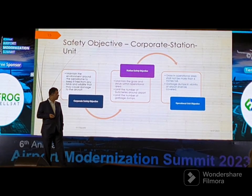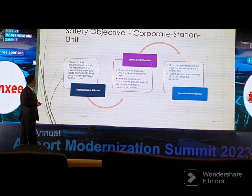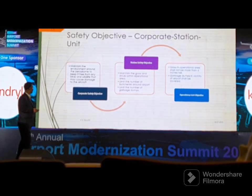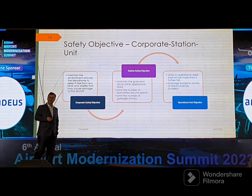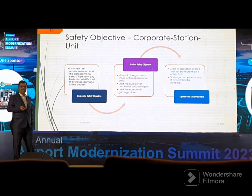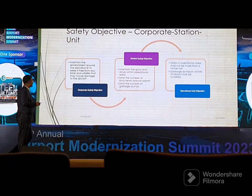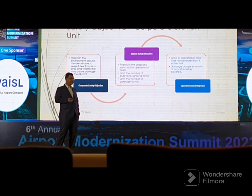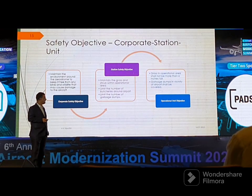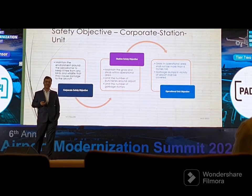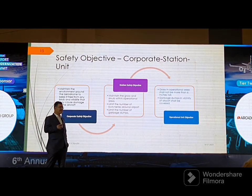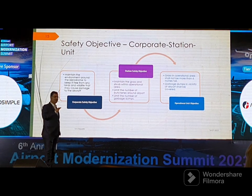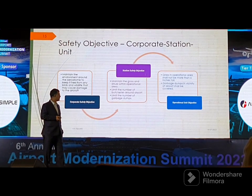Similarly, safety objectives work at different levels. A corporate-level objective might be: maintain the environment around the aerodrome to keep it free from birds and wildlife that may damage aircraft. At the station level it might say: maintain grass and shrubs within operational area limits, limit the number of egrets around the airport, and limit garbage dumps nearby. At the operational unit level it becomes measurable: grass in the operational area shall not be more than six inches tall — so whenever it exceeds six inches you cut it. Similarly, garbage dumps in the vicinity of the airport shall be covered.